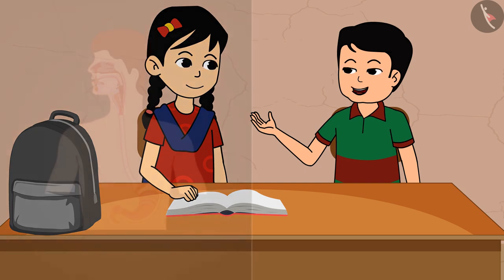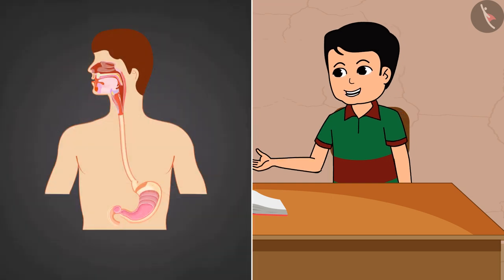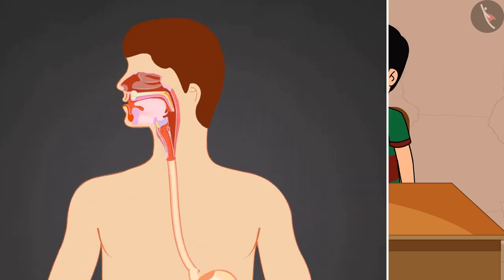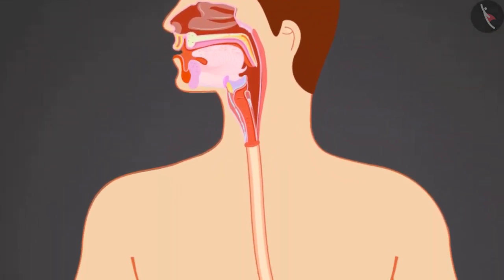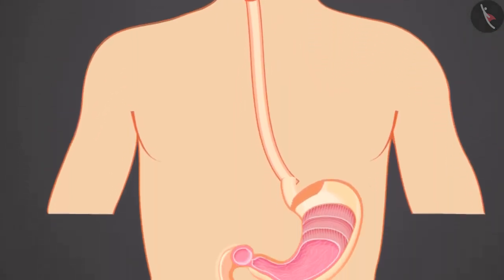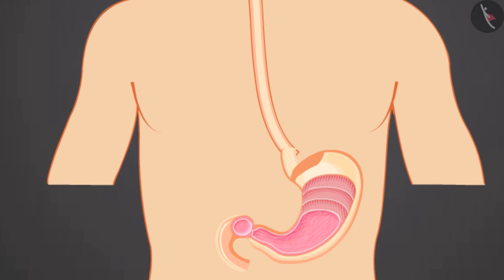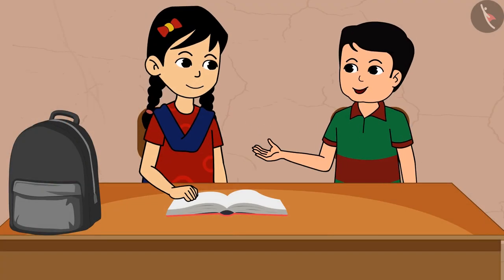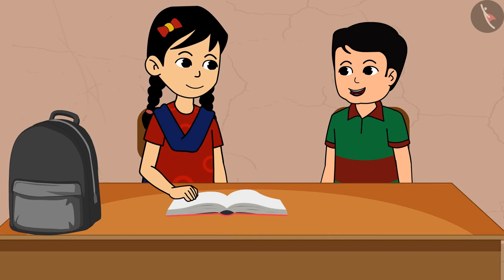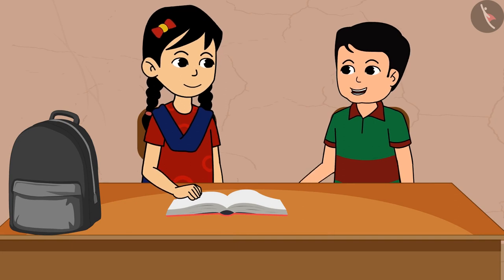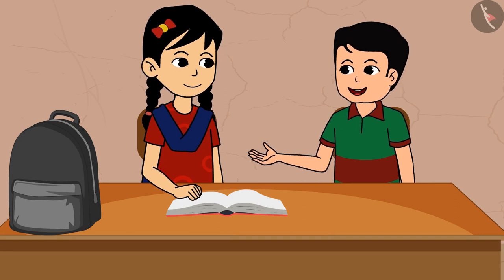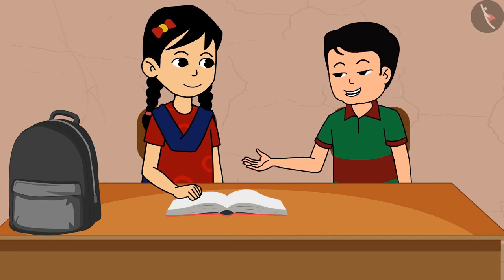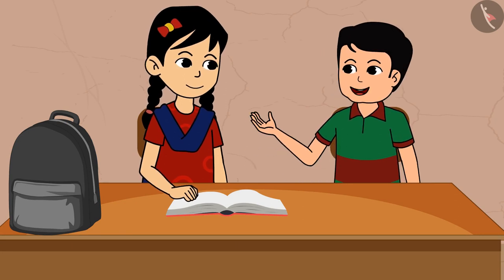Sonu: The process of taking food inside is known as ingestion. The food we eat passes through the esophagus and reaches our stomach. The lining of the stomach secretes digestive juices, hydrochloric acid, and mucus to break down complex food particles into simpler food particles.